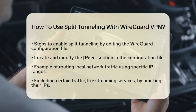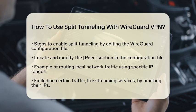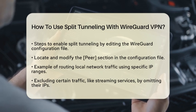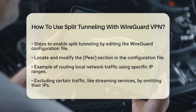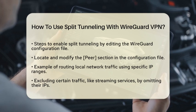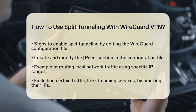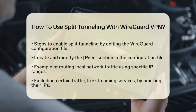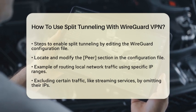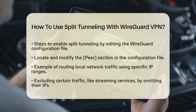Next, look for the section labeled Peer. Here, you will replace AllowedIPs = 0.0.0.0/0 with specific IP ranges or domains that you want to route through the VPN.